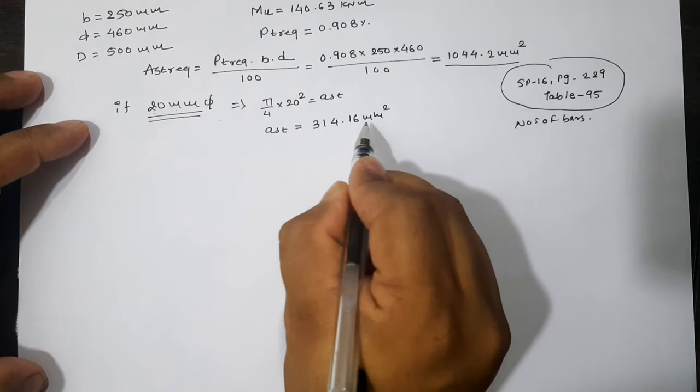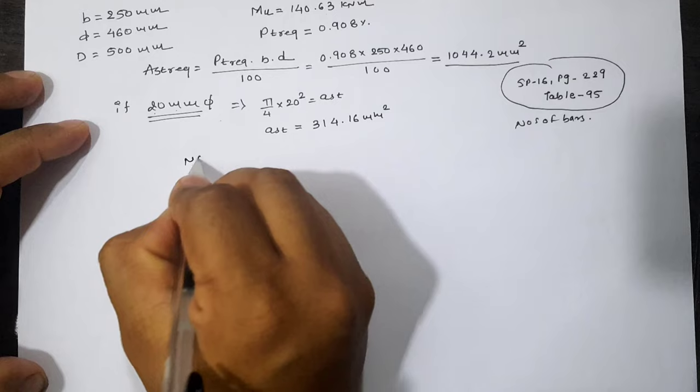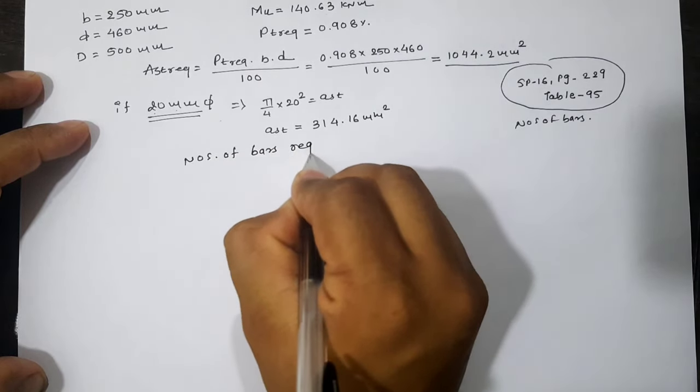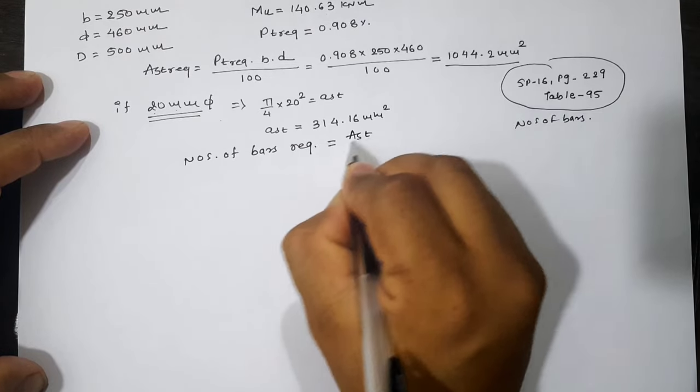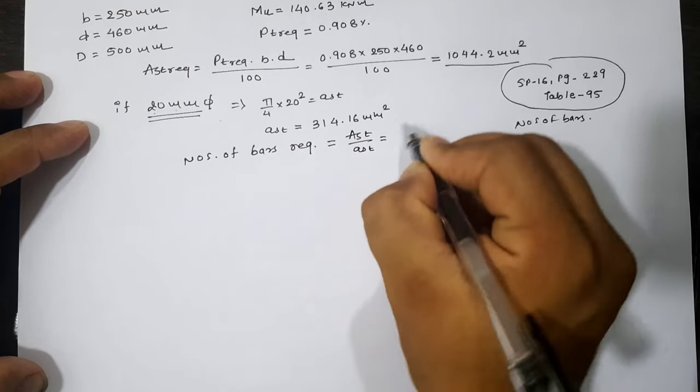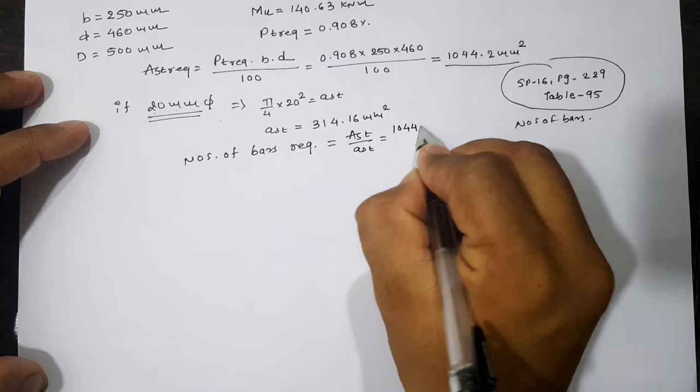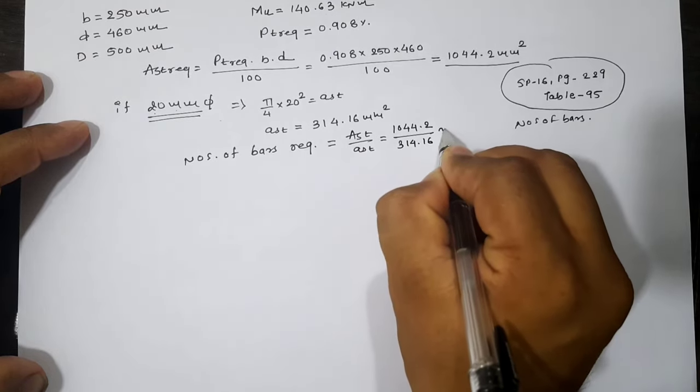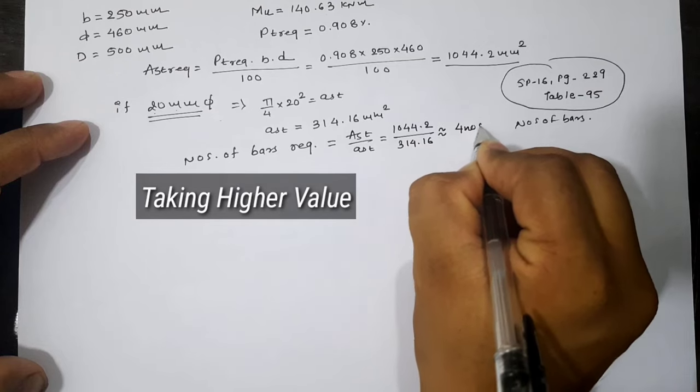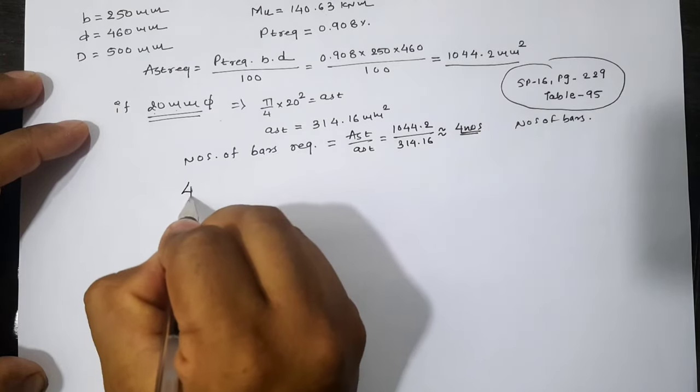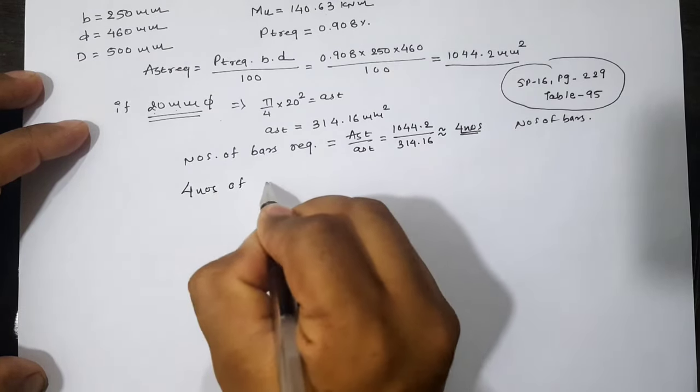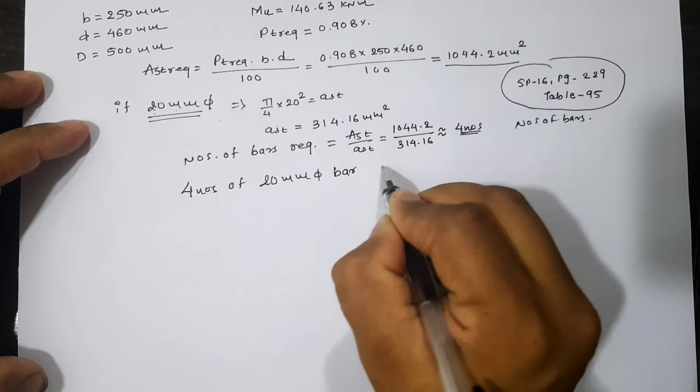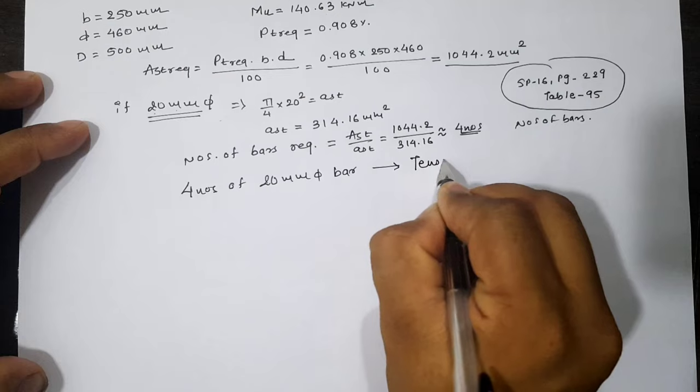Now we require 1044.2 mm², and one 20 mm diameter bar has area 314.16 mm². Number of bars required equals capital AST by small ast, which is near about four numbers. So we can provide four numbers of 20 mm diameter bar as tension reinforcement.